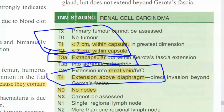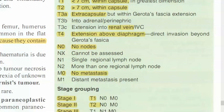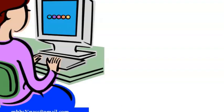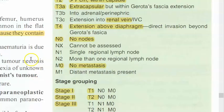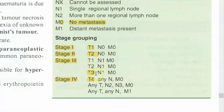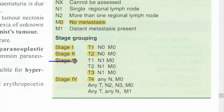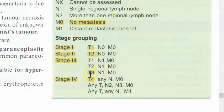For N and M staging: N0 means no lymph nodes affected, N1 is a single regional lymph node, N2 is more than one regional lymph node. M0 means no metastasis; M1 means distant metastasis present. Stage 1 = T1, N0, M0. Stage 2 = T2, N0, M0. Stage 3 = T3 or T1/T2/T3 with N1 (a single regional lymph node affected).